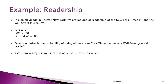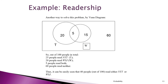Here we see the same thing laid out in a Venn diagram, with the joint probability in the middle. The same data is shown on a basis of 100 people. Five of them read both papers, 40 read at least one, and 60 out of 100 don't read either one.